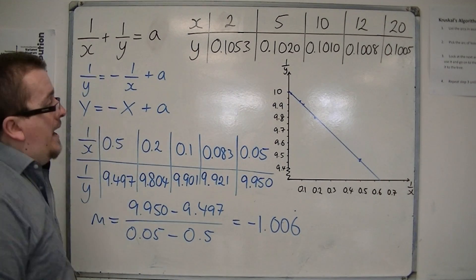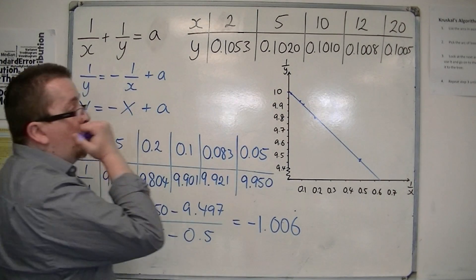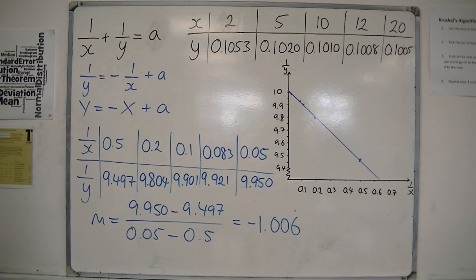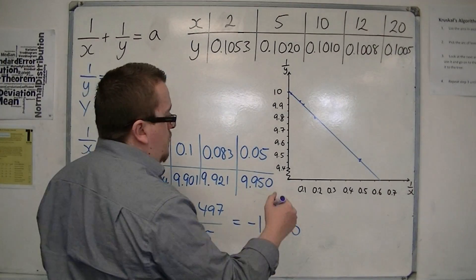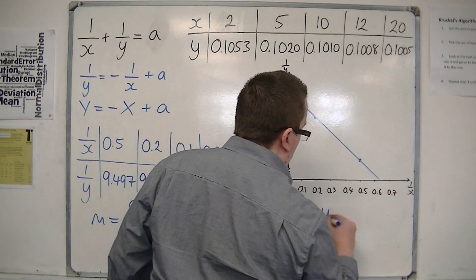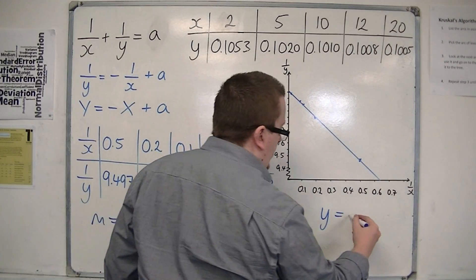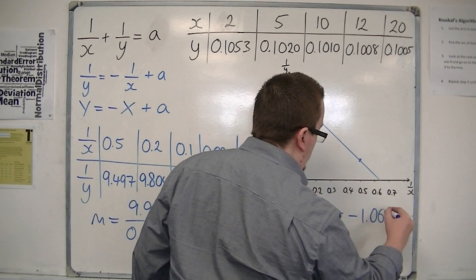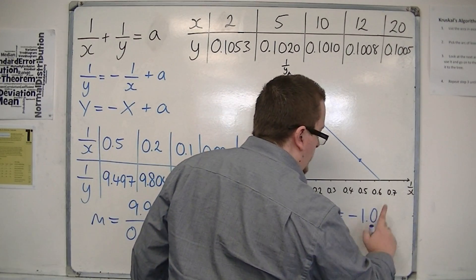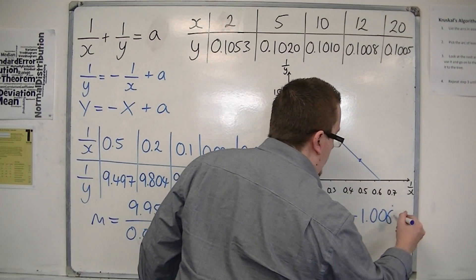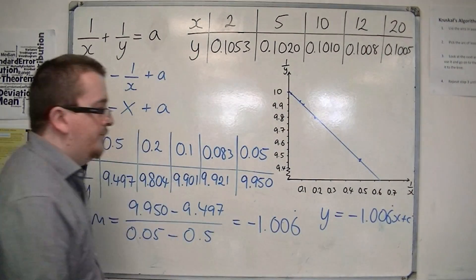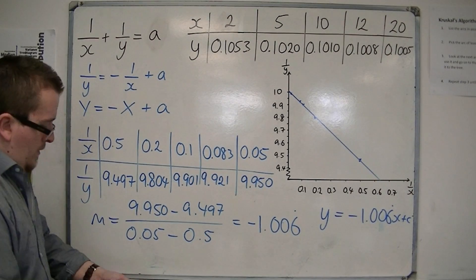And you can work out the value of a, as I say, by figuring where is it crossing the y-axis. Or you could plug this in. So, say, y equals minus 1.006 recurring x plus c.